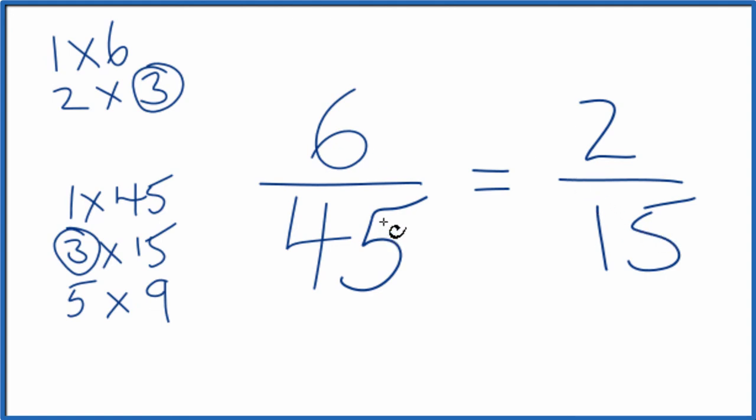So when we simplify 6 over 45, we get 2 over 15. We can't reduce this any further. It's in its lowest terms.